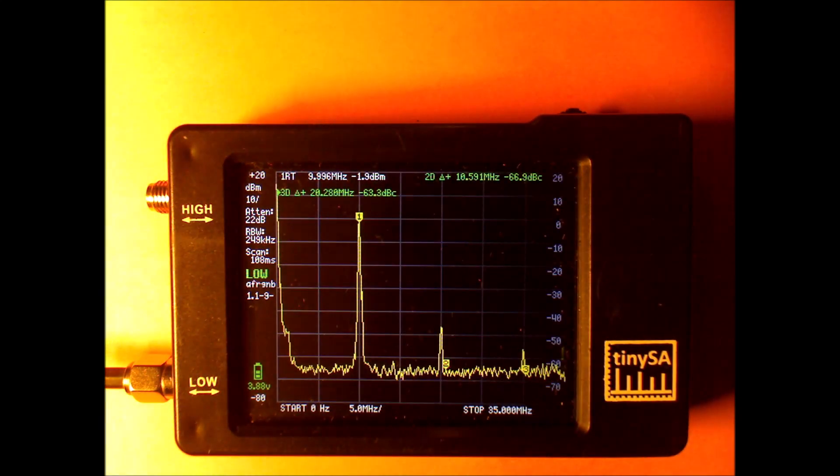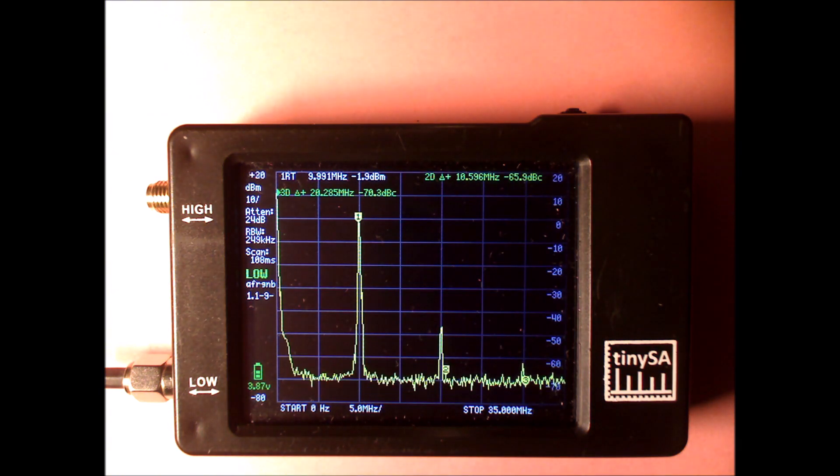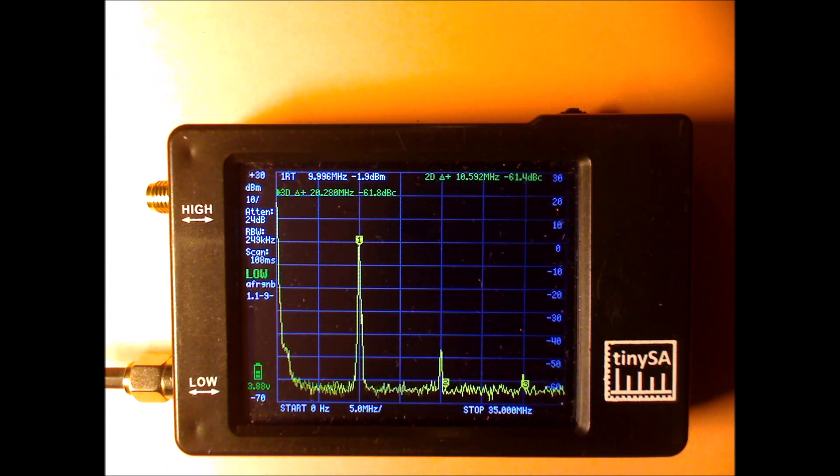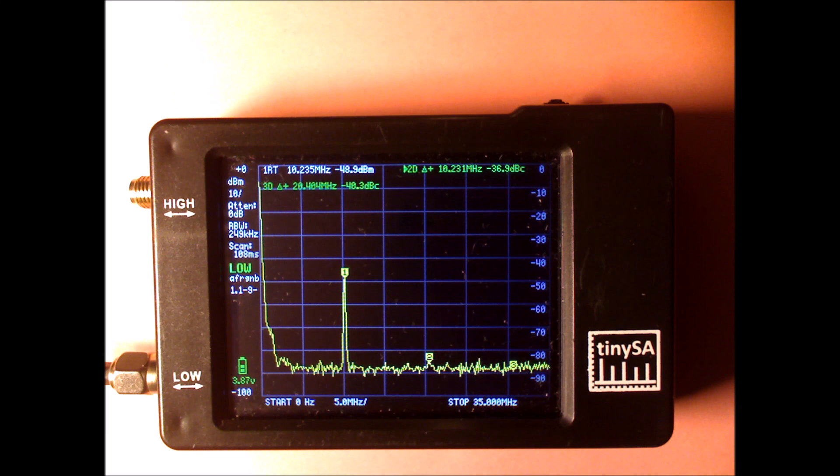We switch the resolution bandwidth back to automatic as to have a good comparison. And we set the stop frequency back to 35 MHz so that we have the same picture to look at. I've now connected the old analog signal generator. It has a nice switch to change the output level. I've put it to minus 50 dBm and I'm going to increase it in steps of 10 dB.